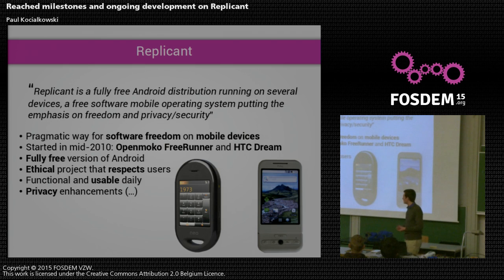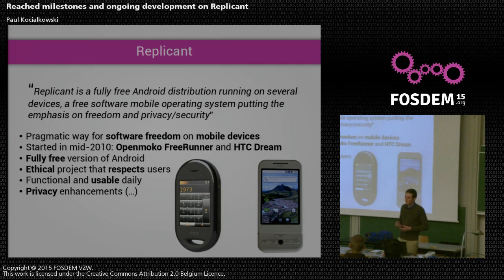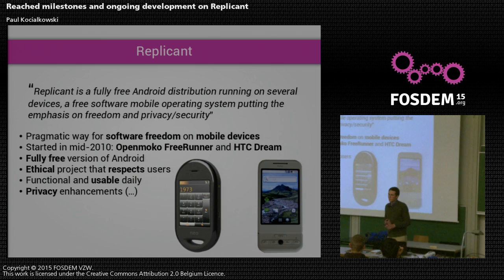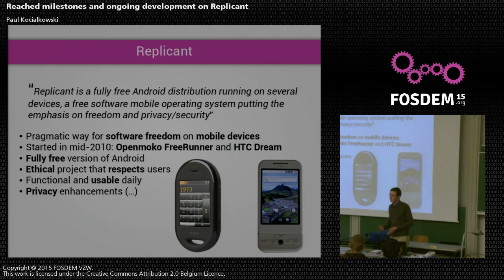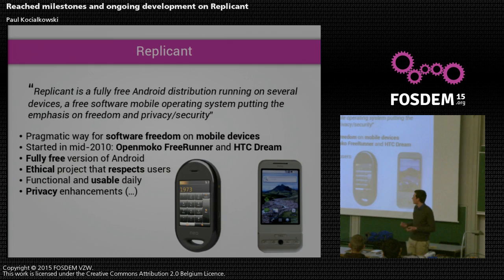That's how the idea of creating a fully free version of Android came up. Since the very beginning, Replicant was meant to be an ethical project that respects the user's freedom. That means, first of all, we don't distribute non-free software and we don't recommend the use of non-free software, because distributing non-free software along with the system is taking the decision instead of the user. We think that's unacceptable. The very ground ideas behind Replicant are the ideas of free software, so we do not want to recommend non-free software.